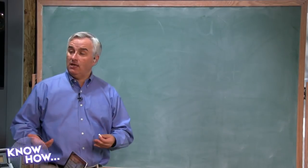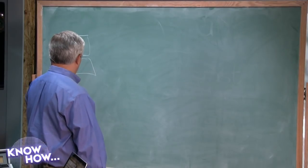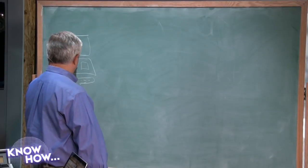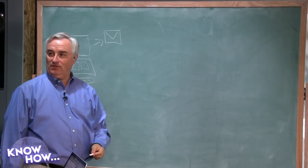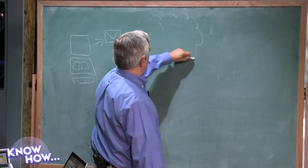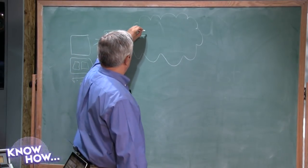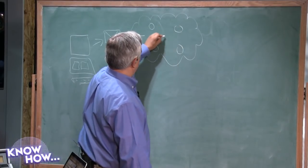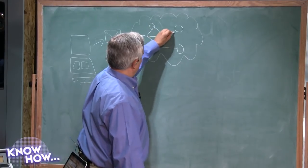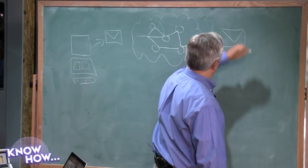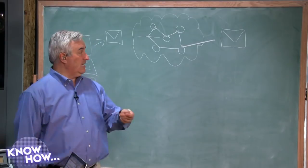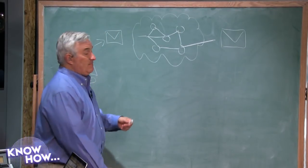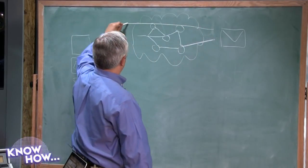Let me draw a diagram so we understand what we're doing. When you communicate — say I'm going to send an email or surf a web page — I'm here on my computer, maybe in an internet cafe. I want to send an email. Normally, the internet is the cloud, but inside this cloud are servers — lots of them. Bits of the email get sent across the internet via servers, sometimes multiple servers, then reassembled. But there's a problem: every server along the way can read that email. That's insecure, that's not private.